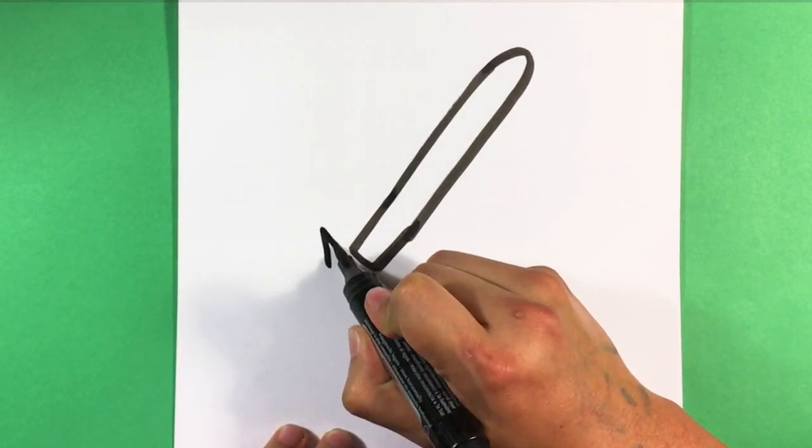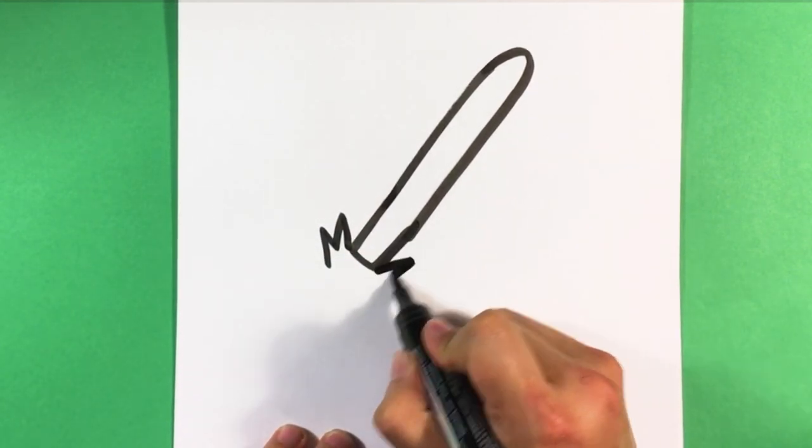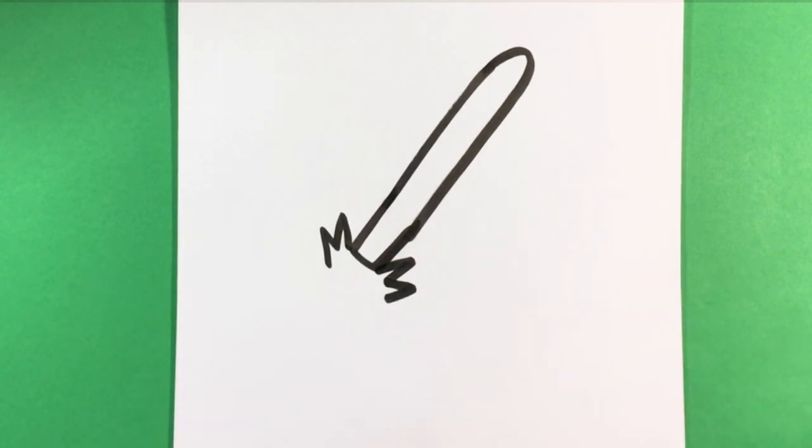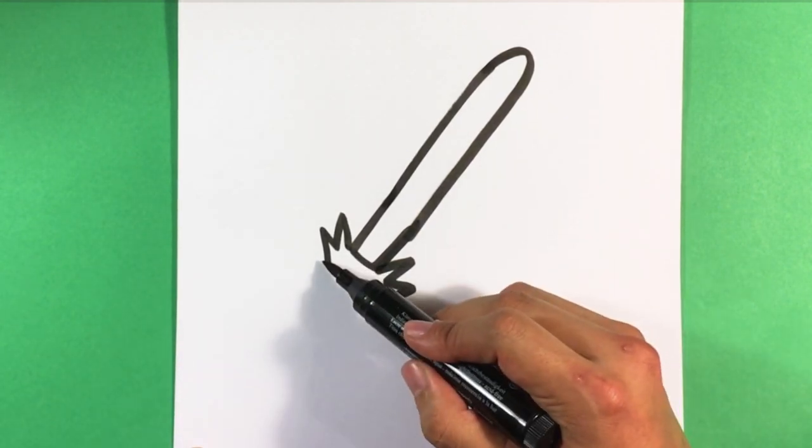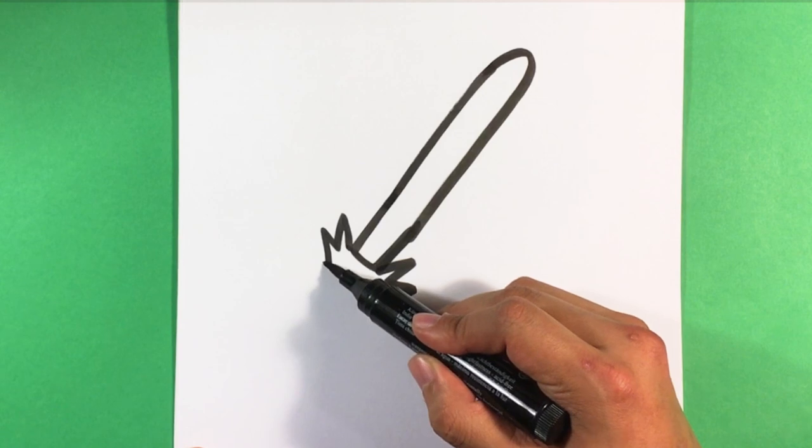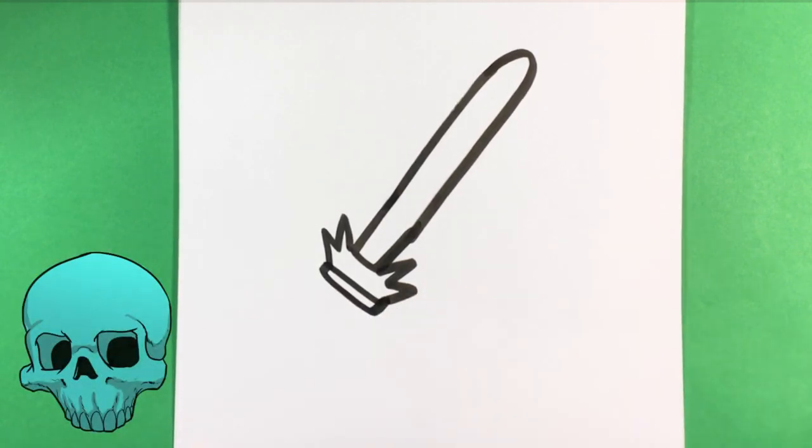Then, we're going to go almost like a lightning look, and that's going to be the bristles of the broom. The thing that ties it together.